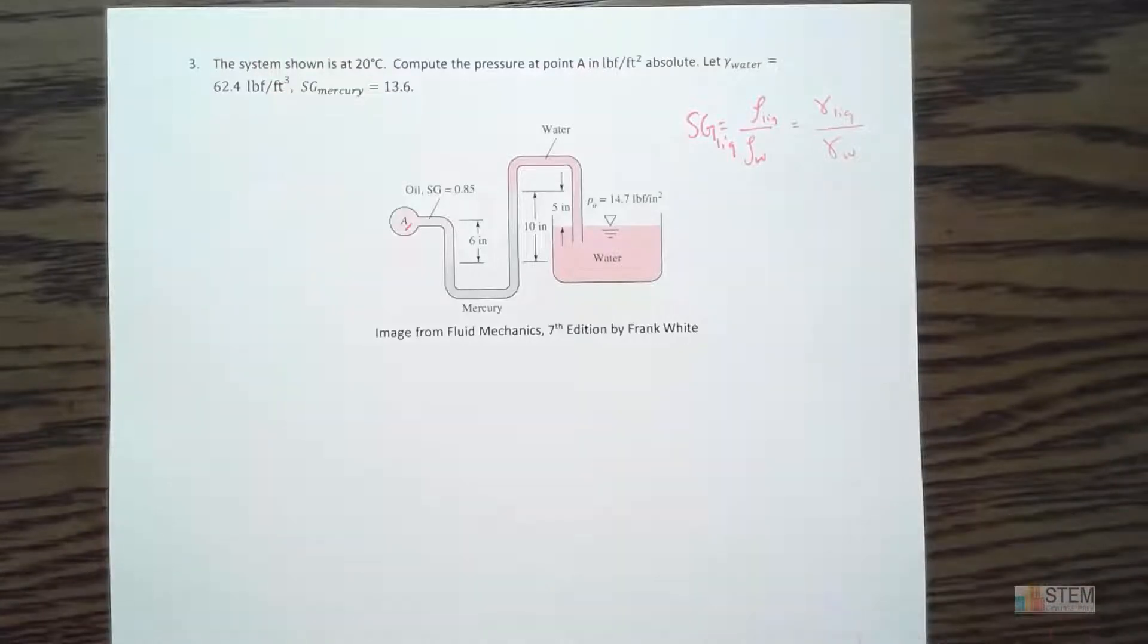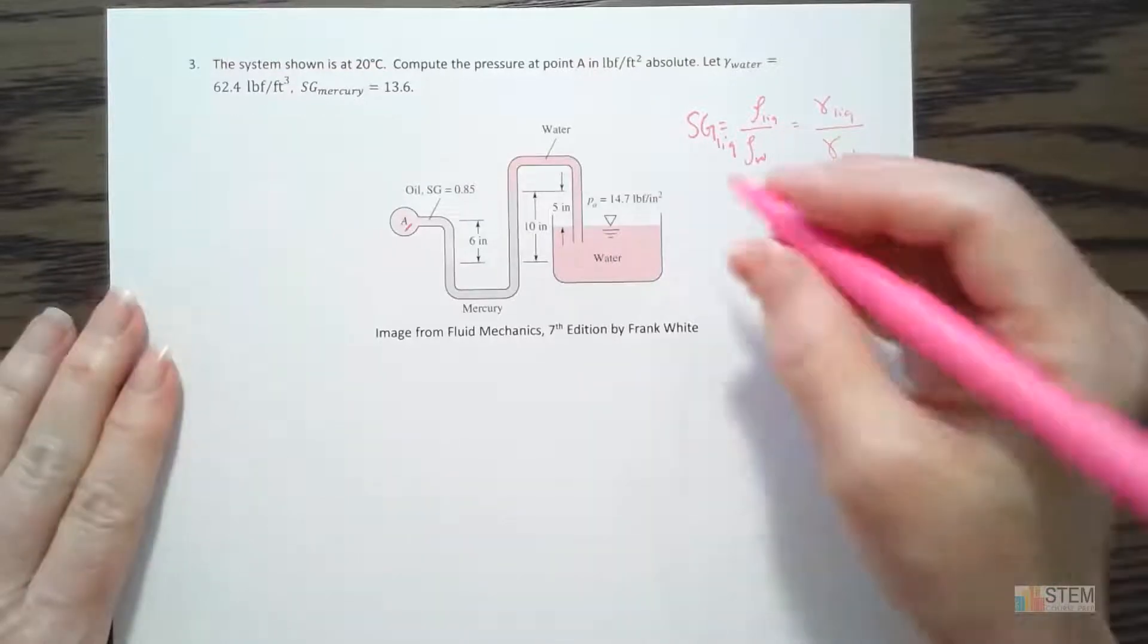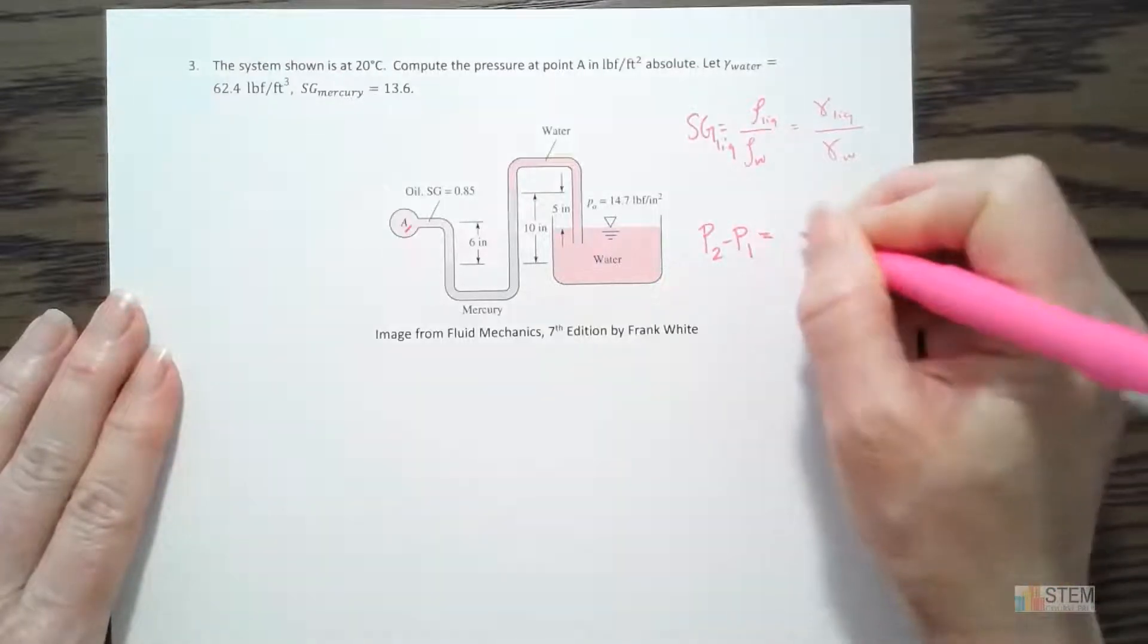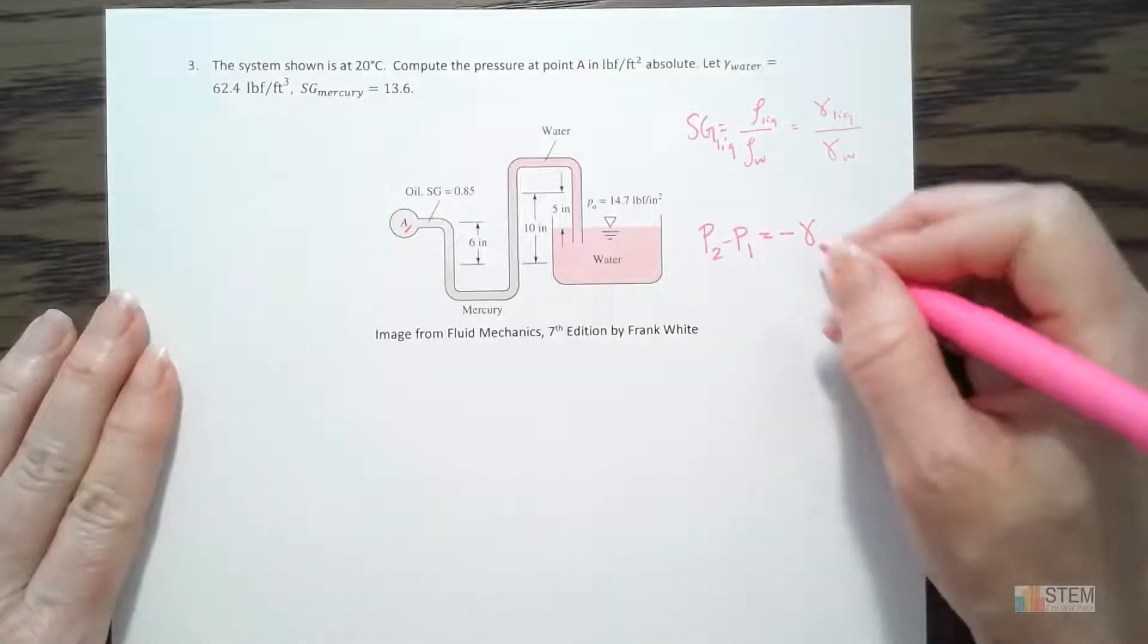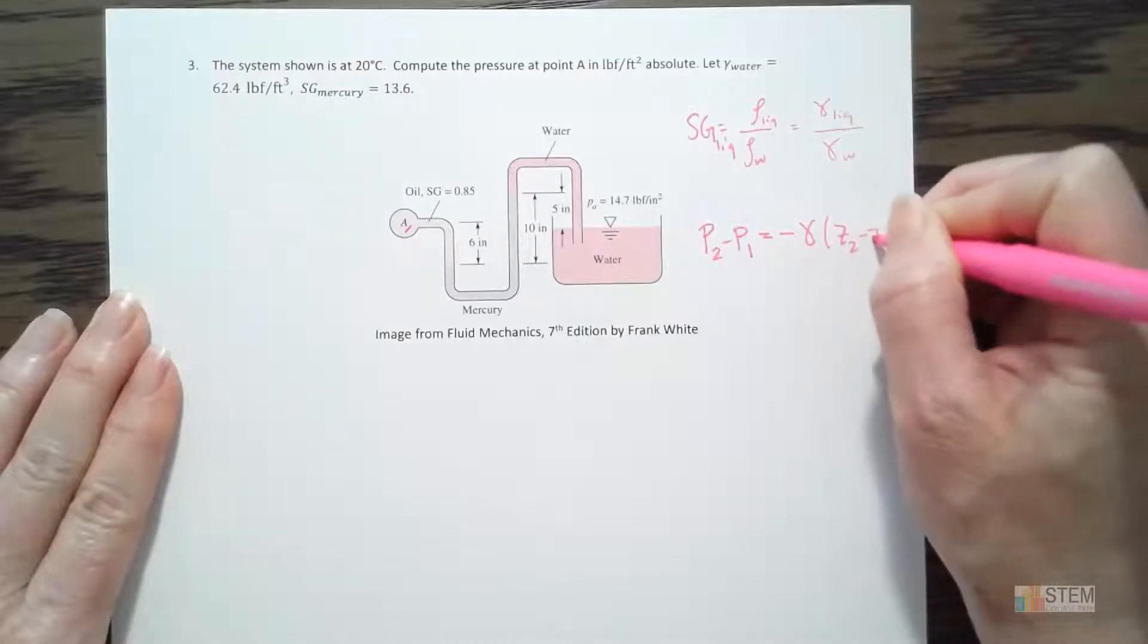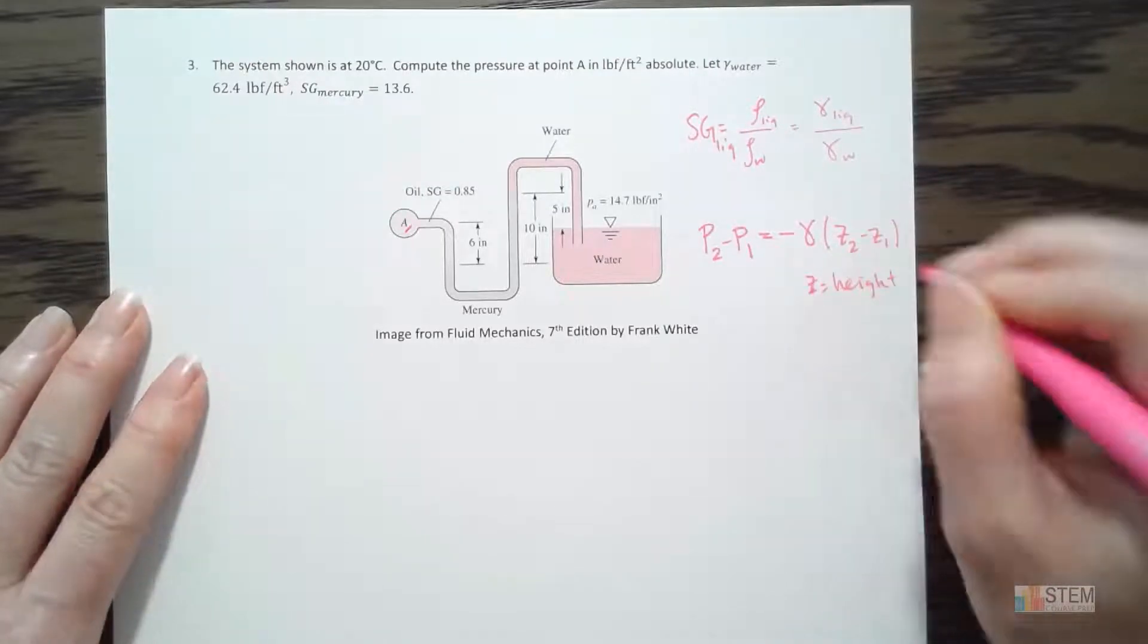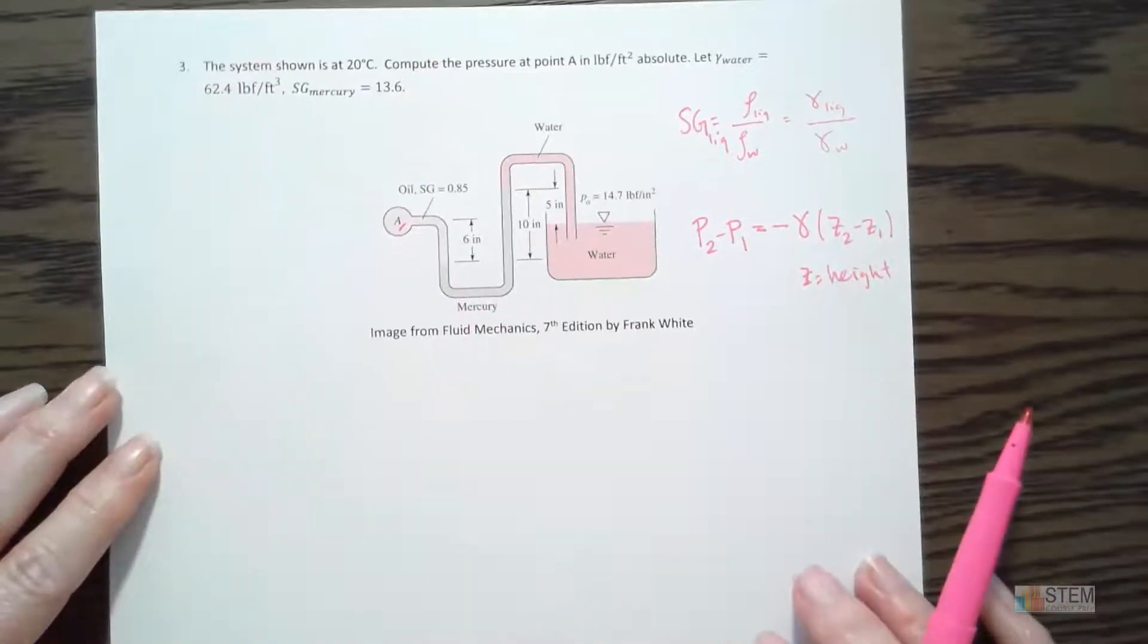Okay. So this is a manometer problem. So the equation that you're going to use, just the basic general equation, we're going to have a change in pressure going from point 2 to 1 here, and then it's going to be equal to negative gamma, which remember gamma is specific weight. And then you're going to multiply that by the change in height. So Z would be height.